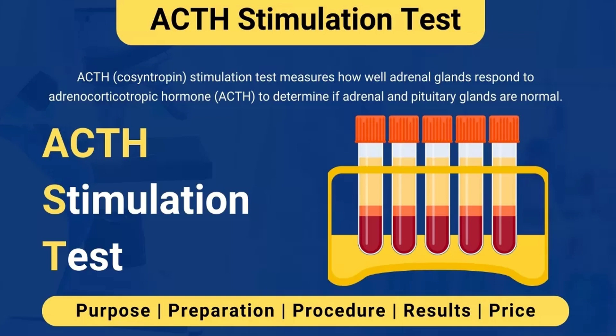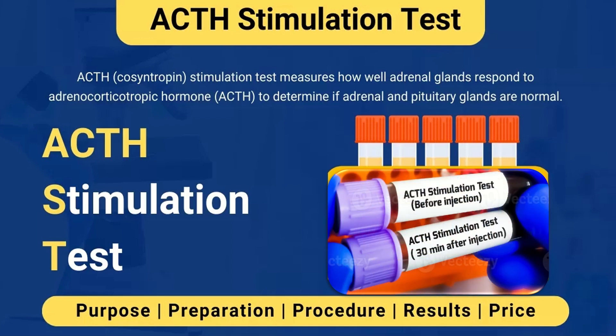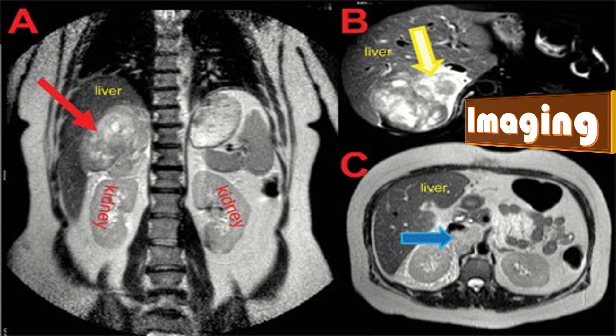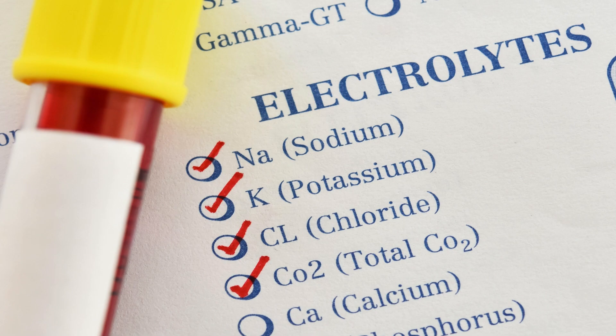Next is the ACTH stimulation test. The ACTH or cosyntropin stimulation test measures how well the adrenal glands respond to adrenocorticotropin hormone, to determine if the adrenal and pituitary glands are normal. Imaging studies — ultrasound, CT scan, or angiography — localize adrenal tumors and may identify pituitary tumors.